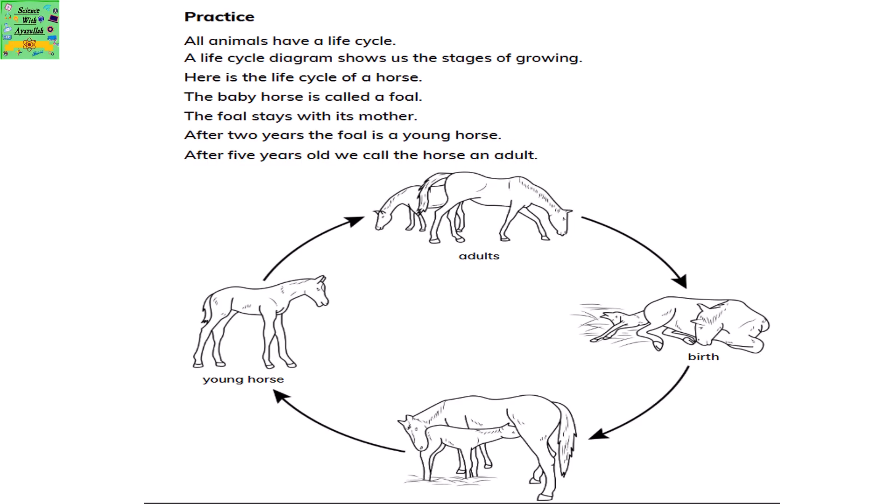All animals have a life cycle. A life cycle diagram shows us the stages of growing. Here is the life cycle of a horse. The baby horse is called a foal. The foal stays with its mother. After two years, the foal is a young horse. After five years old, we call the horse an adult.